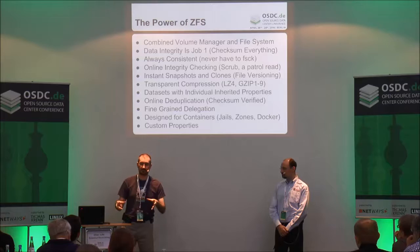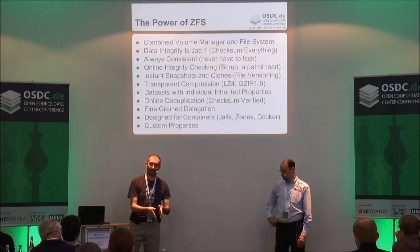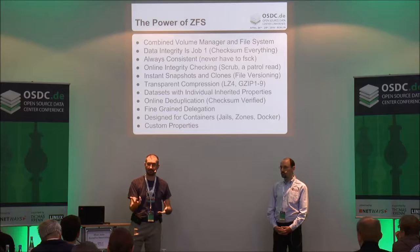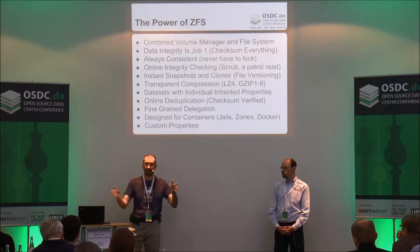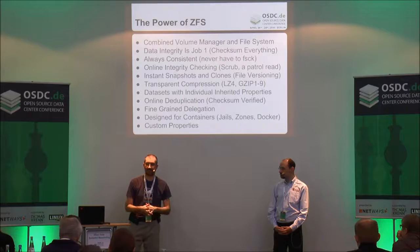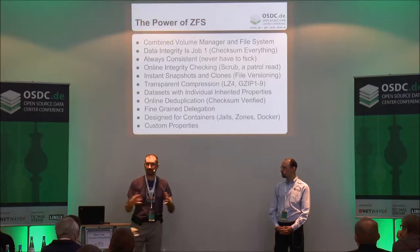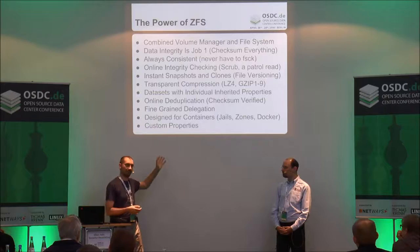ZFS also has transparent compression. As data is written into the buffer to be written to disk, it can be compressed. When it's written to disk it takes up less space. But that's not the only advantage — especially in a database with a lot of text-based information, it can increase your throughput. A standard hard drive can only do 100 to 150 megabytes a second, but if data compresses two to one, you can write 300 megabytes per second. The application doesn't have to know — it's all transparent inside the file system.